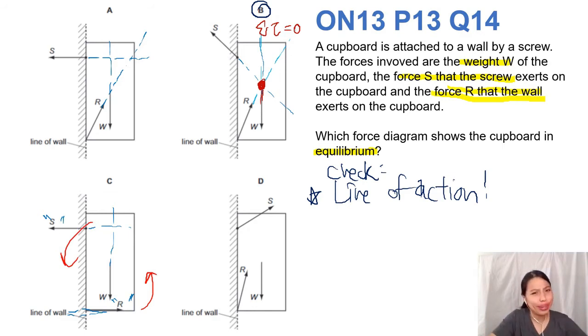Next one, S is pointing in a very strange direction. Shouldn't this S force be holding the cupboard to the wall? Why is it pointing out straight away? You can see that this S, something's wrong anyway. Let's check the line of action. Oh, look at this tricky question - the lines of action intersect. There's just one problem with this thing: your S force is pointing the wrong direction. The screw is supposed to hold the cupboard to the wall, so it should be pointing inside the wall or this way, but not outside.